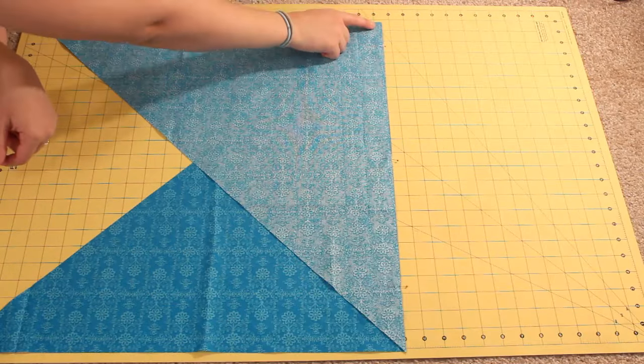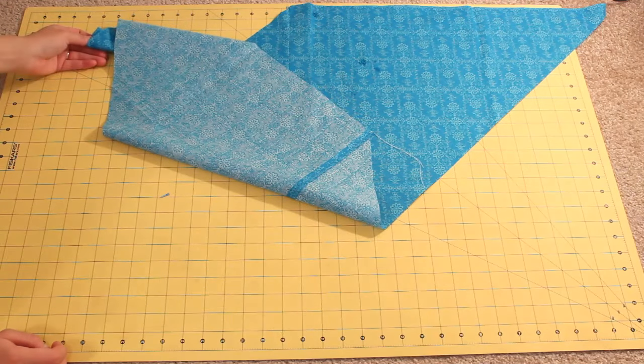Open it up and iron the seam flat. The piece should now resemble a rhombus.